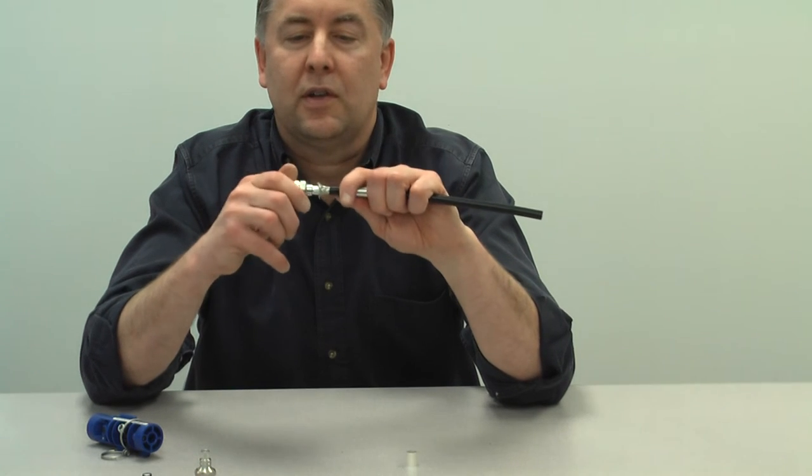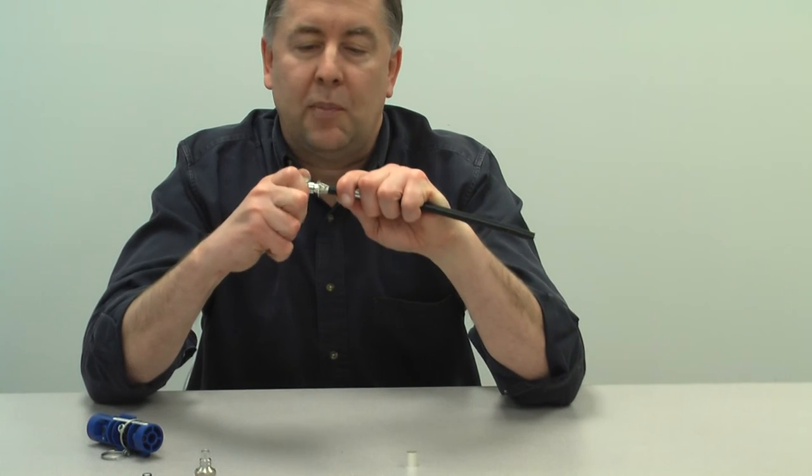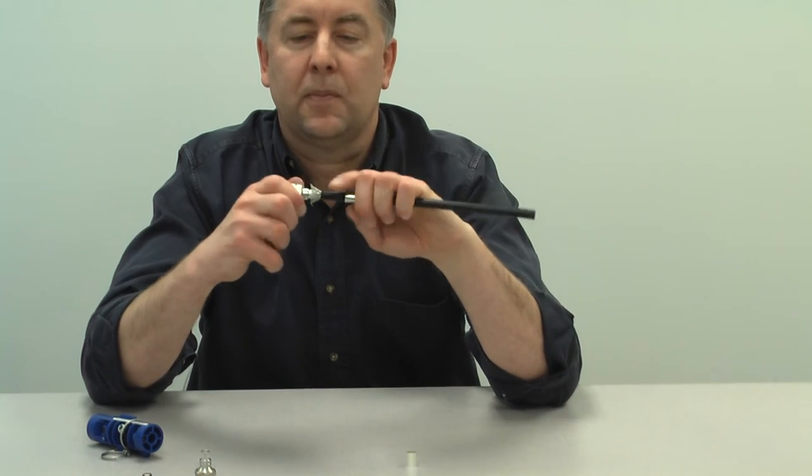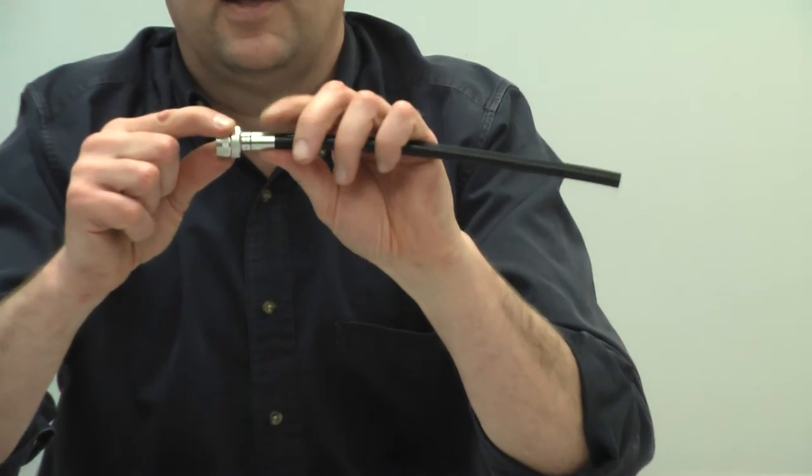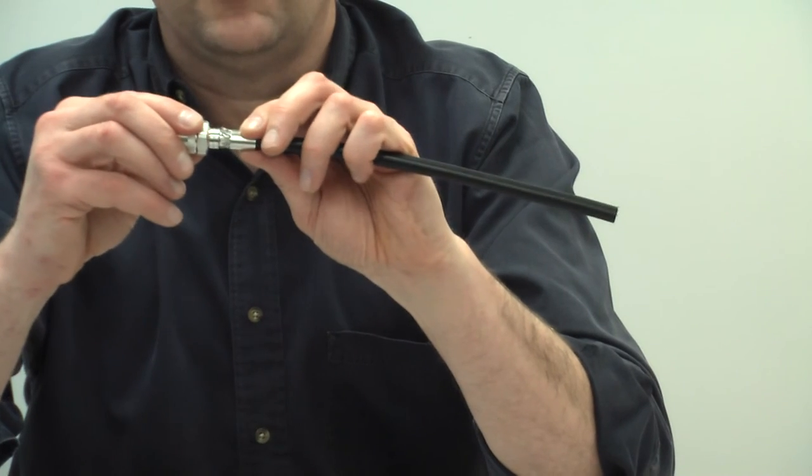Place that over the outer conductor, snap onto the center conductor, bring that ferrell up, and look at that. Those braids are right where you want them to be.